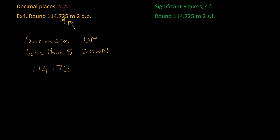Let's do the significant figures version. Two significant figures means the line goes in after the second significant digit. We look at what's after the line — it's a four, so it's a round-down situation, and we just keep what's in front of the line. However, the original number was 114.725, so those two 1s represent 100 and 110. We need to add a zero to reflect that place value, writing it as 110 and not 11.